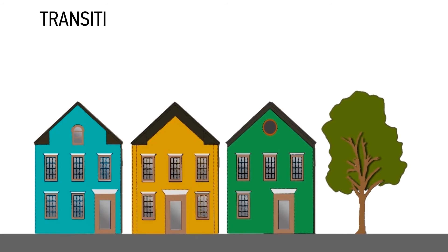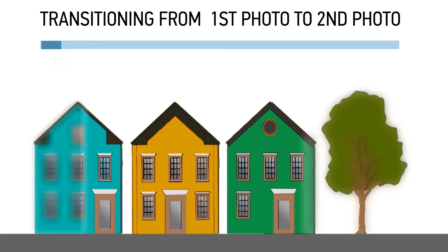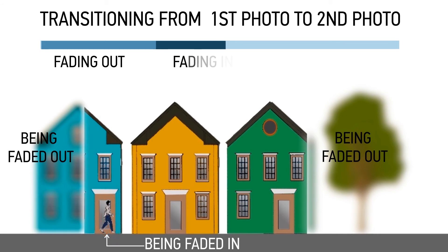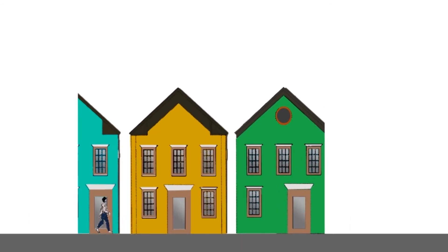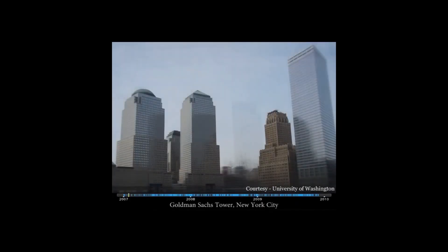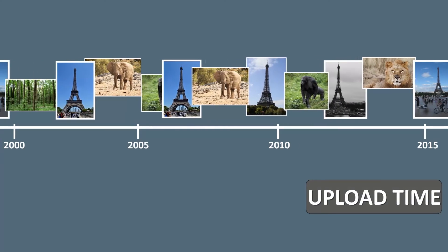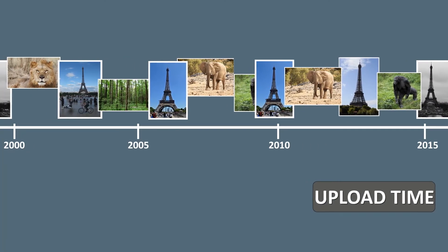In order to create a smooth transition, the content present in the first image is progressively faded out, while the features of the second image are correspondingly faded in, as part of the transition from the first image to the second image. This is how Google accomplishes smooth transitions between the images. In order to create a timelapse video, they just arrange the images according to their upload time.